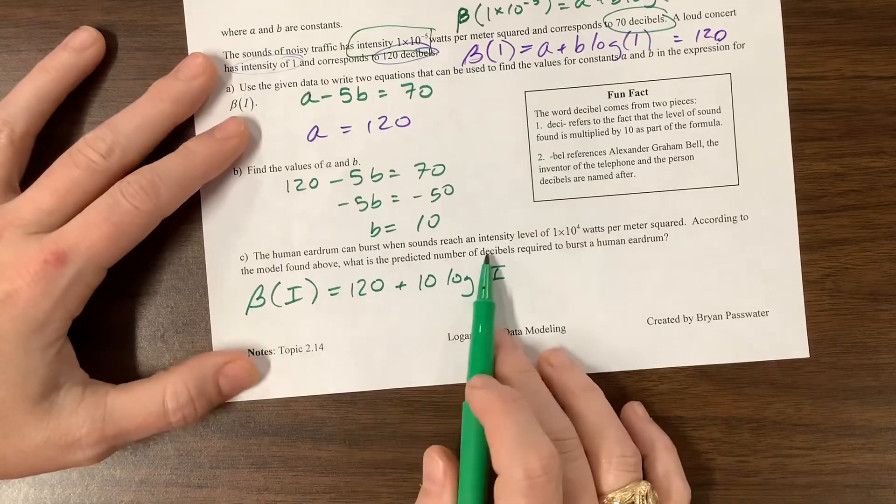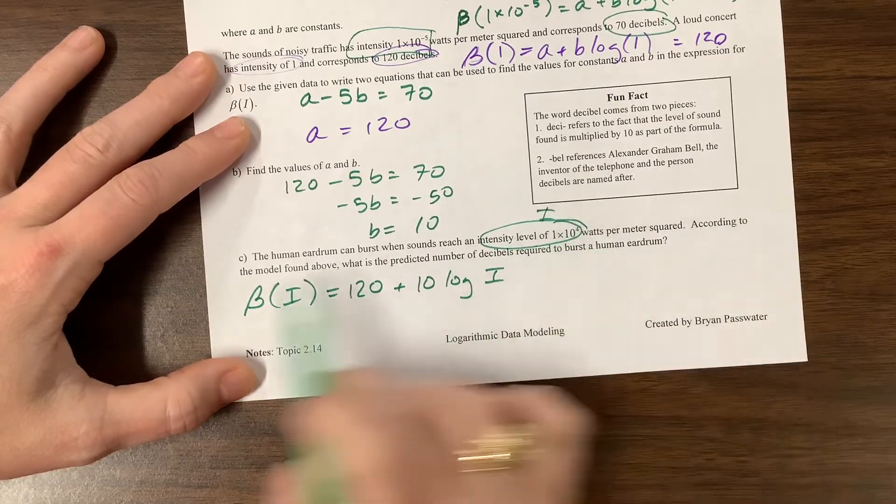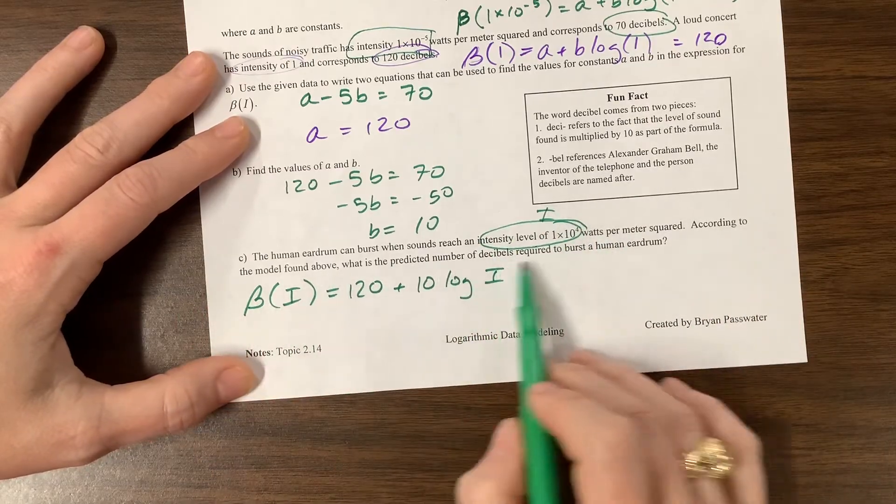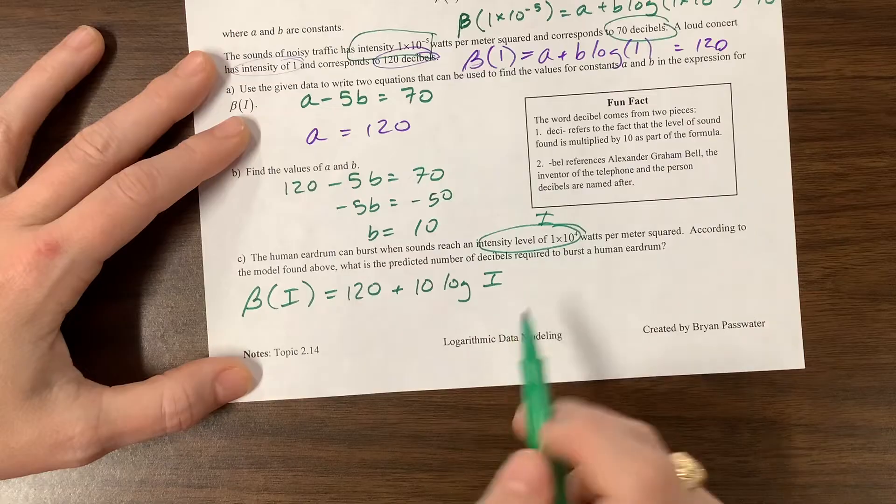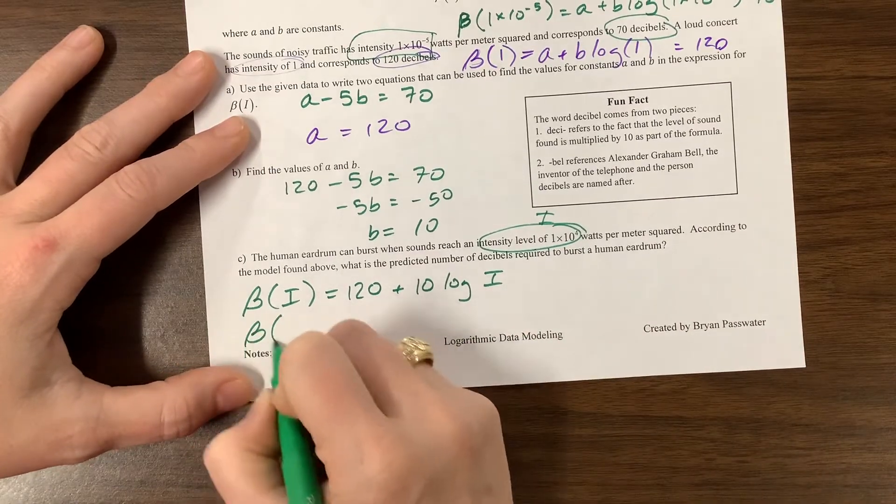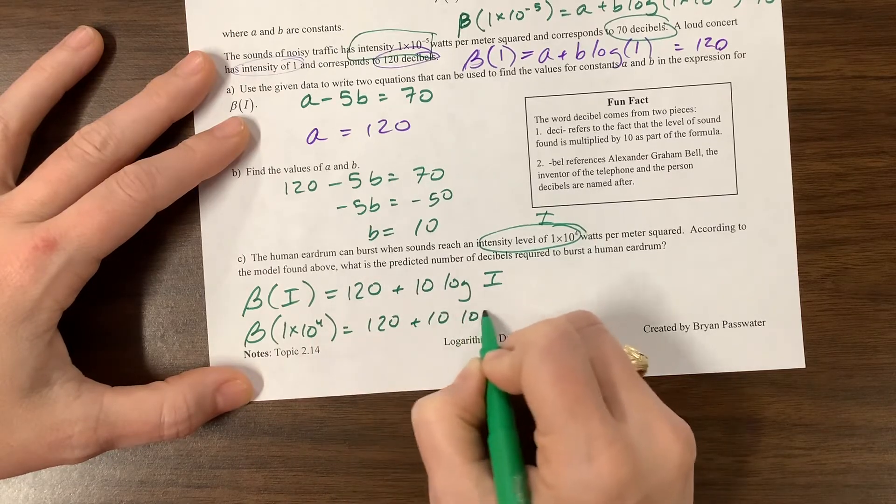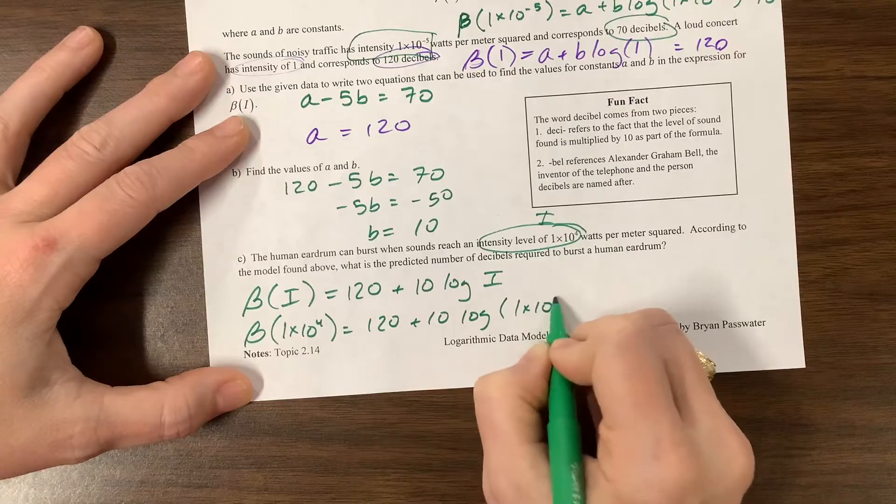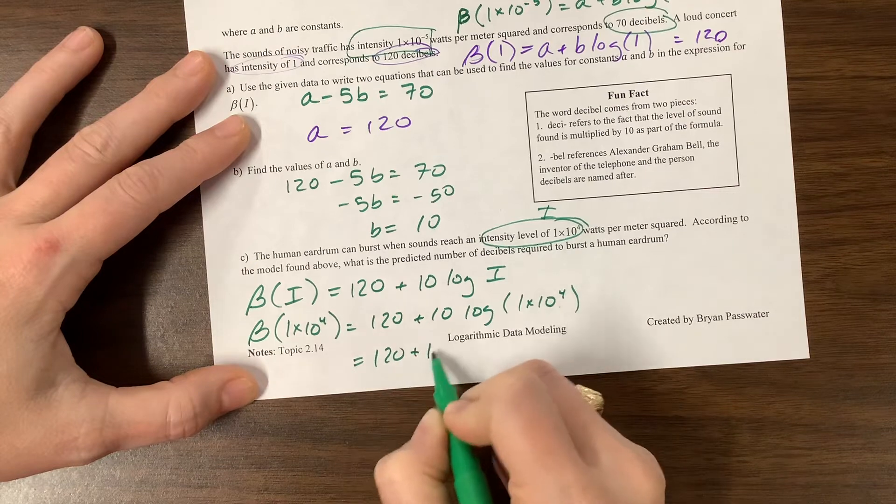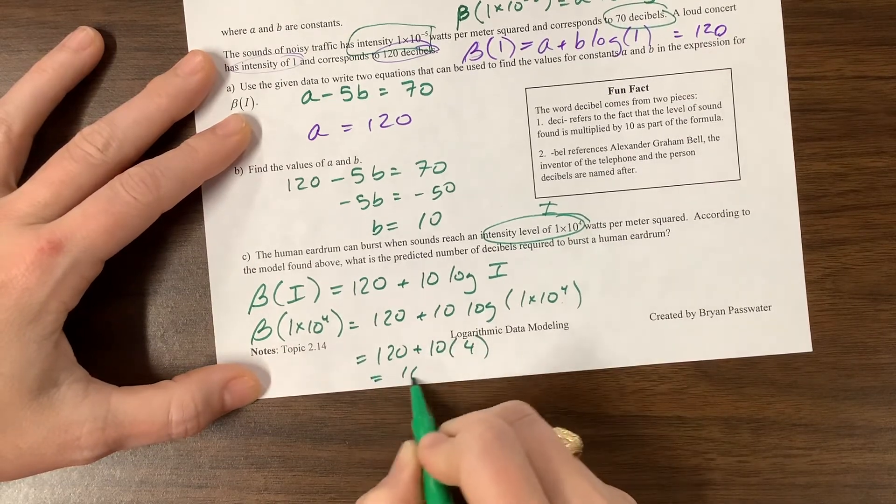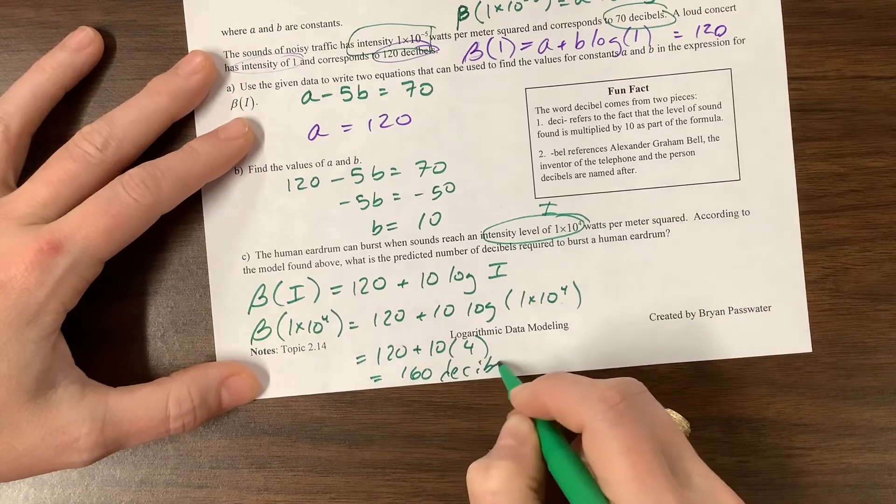So now they say a human eardrum can burst when sound reached an intensity of that. So this intensity is the I value. According to the model, what is the predicted number of decibels required? So we're looking for the Y value when they give us the X, or we're looking for the output when they give us the input. So let's plug this in. We want this beta of 1 times 10 to the 4 is equal to 120 plus 10 times log of 1 times 10 to the 4. The 1 does nothing for us. Log by 10 of 10 to the 4 is 4. So I get 120 plus 10 times 4. 10 times 4 is 40. This is 160 decibels. And there we go.